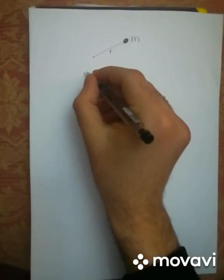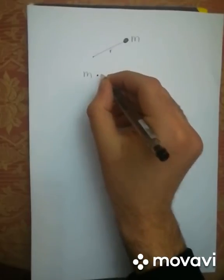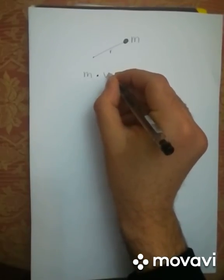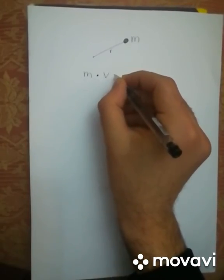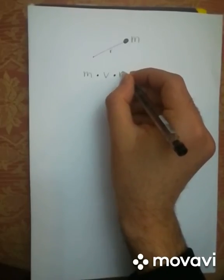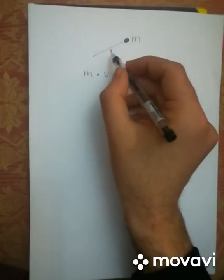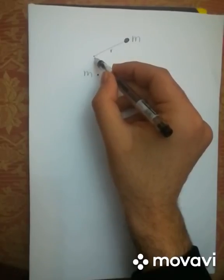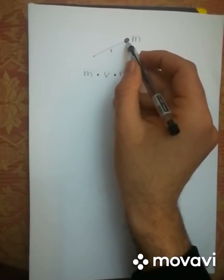Angular momentum is equal to the mass of an object multiplied by its velocity, its linear velocity, and multiplied by r, where r is the radius of its path, the distance between the center of rotation and the center of the object.